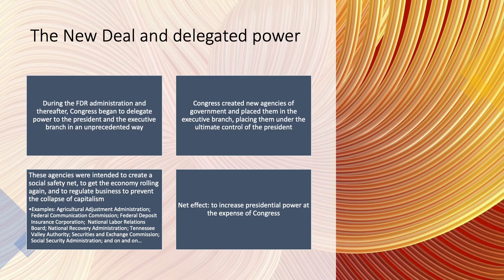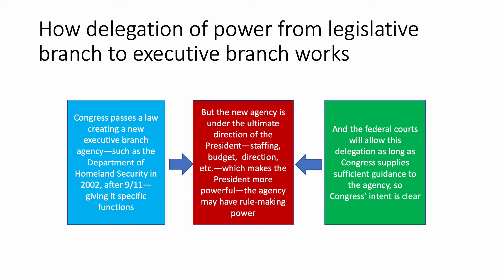The agencies make what we call rules, but those are actually laws. This is how it works: Congress passes a law creating a new agency — such as the Department of Homeland Security in 2002, created after the 9/11 attacks — and gives the agency specific functions. It's placed in the executive branch, so the new agency is under the ultimate direction of the president: staffing, budget, direction, etc. Many of these agencies, like the Occupational Safety and Health Administration and the Environmental Protection Agency, make rules about whole areas of our economy — the workplace, the environment — and those rules have the force of law.